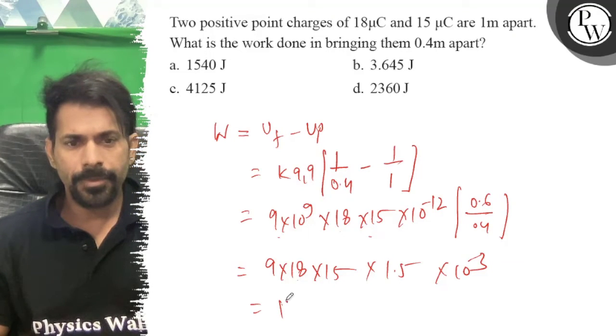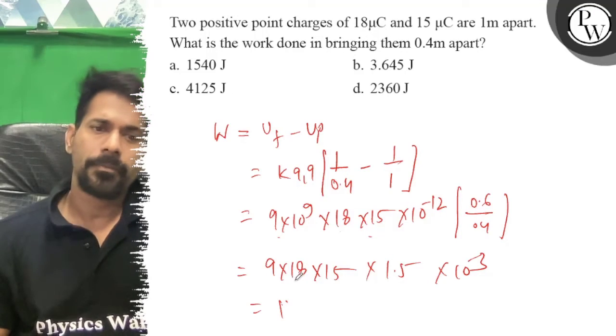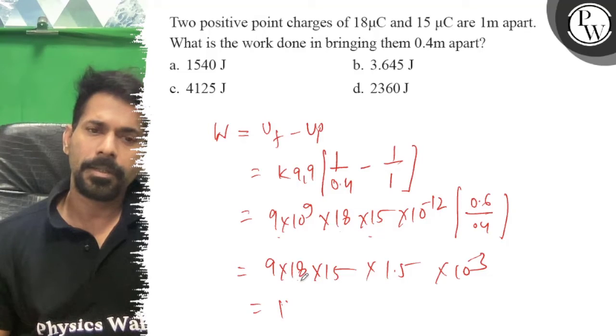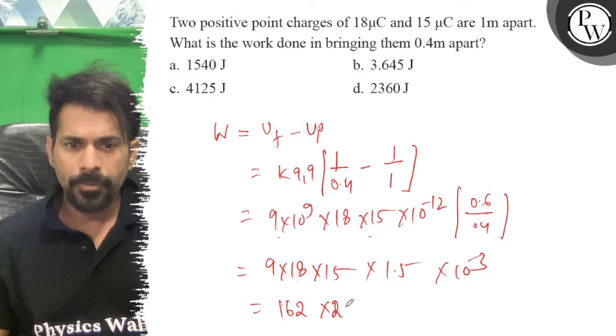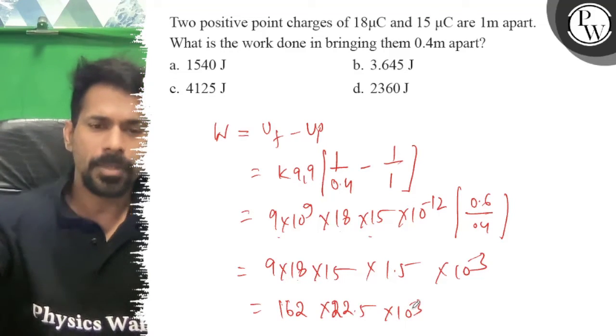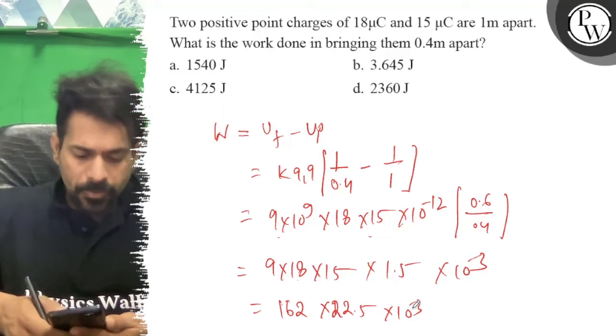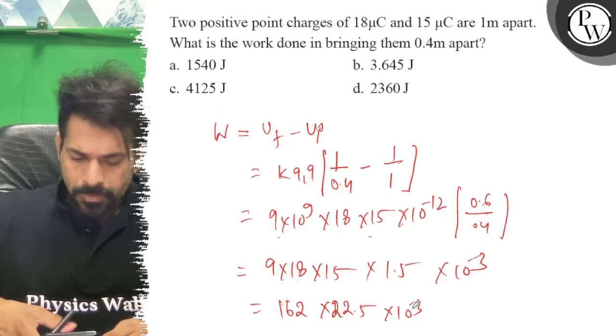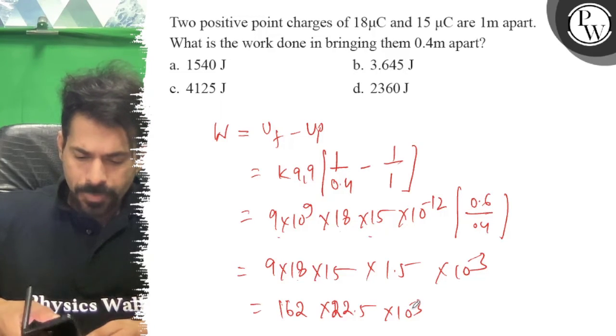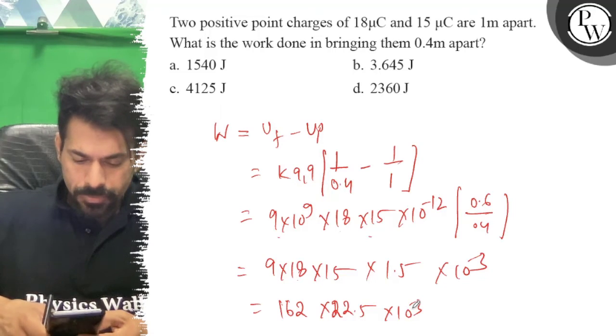Multiplying, we get 162 into 15 which is 22.5 times 10 power minus 3. Let me multiply these: 162 into 22.5 equals 3645.